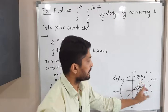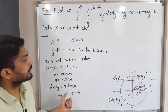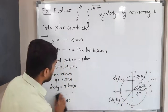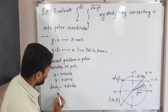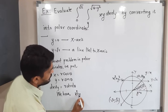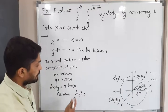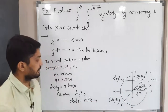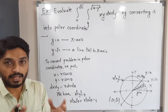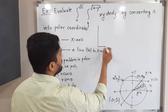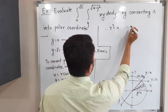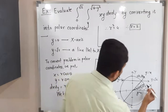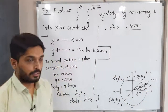The strip is bounded below by the origin where r = 0, and bounded above by the part of the circle. We convert the circle equation to polar form: substituting x = r cos θ and y = r sin θ into x² + y² = 4 gives r²(cos²θ + sin²θ) = 4. Since cos²θ + sin²θ = 1, we get r² = 4, so r = 2.